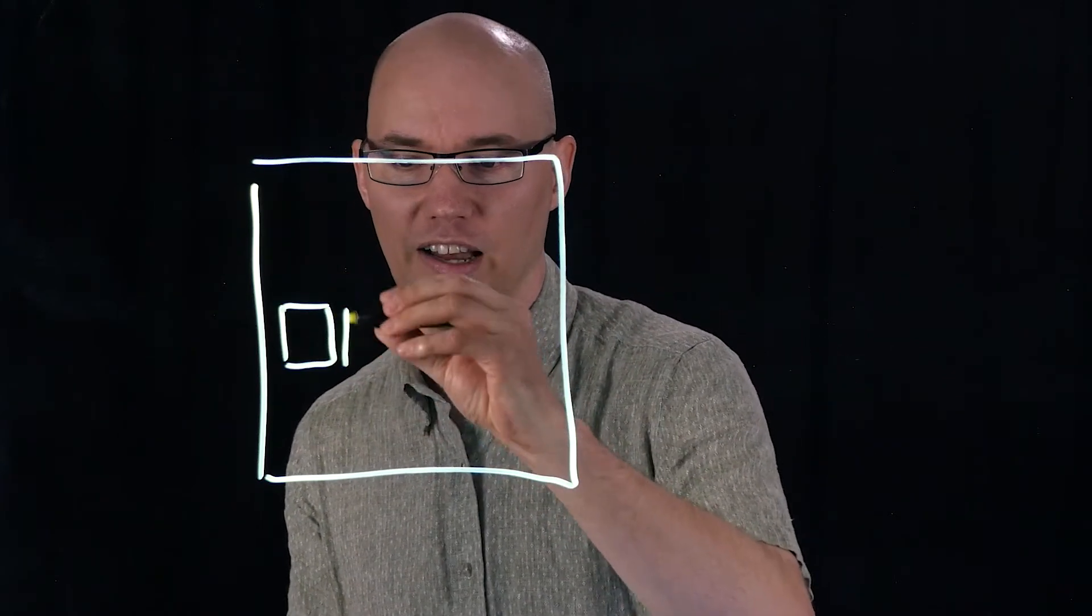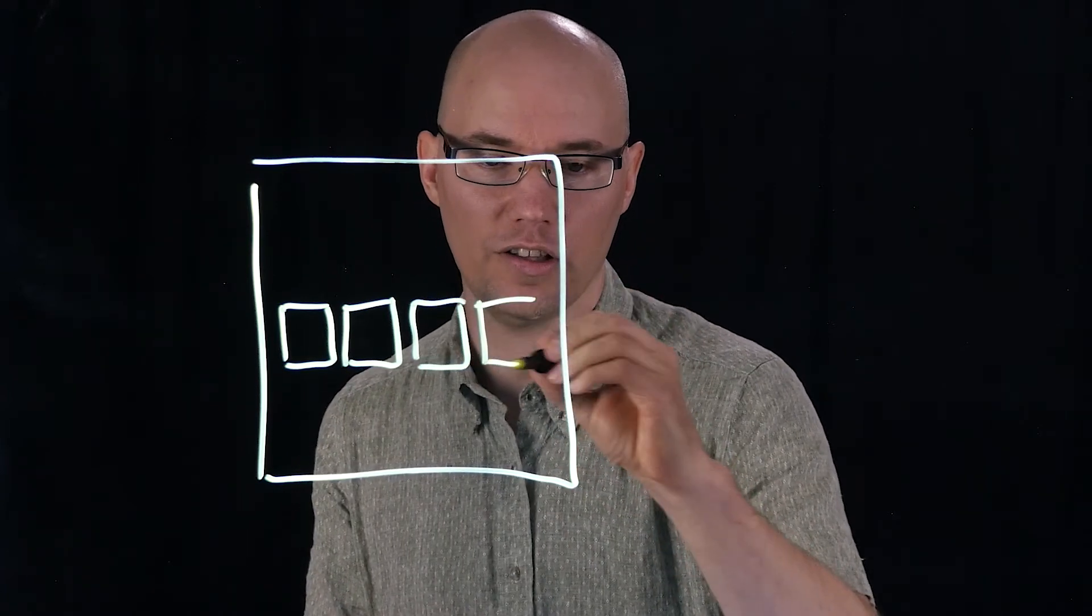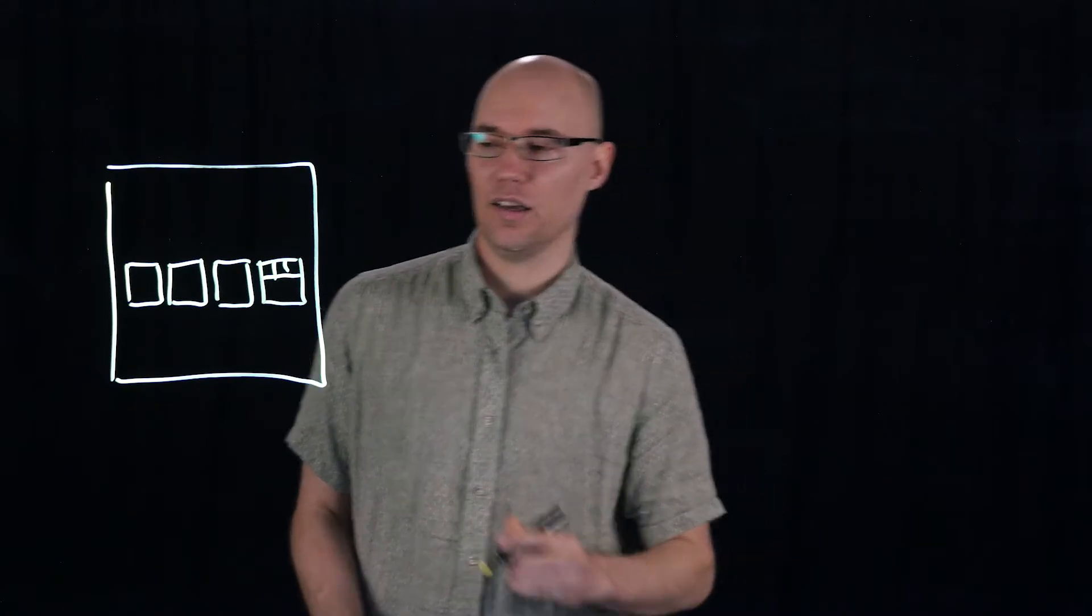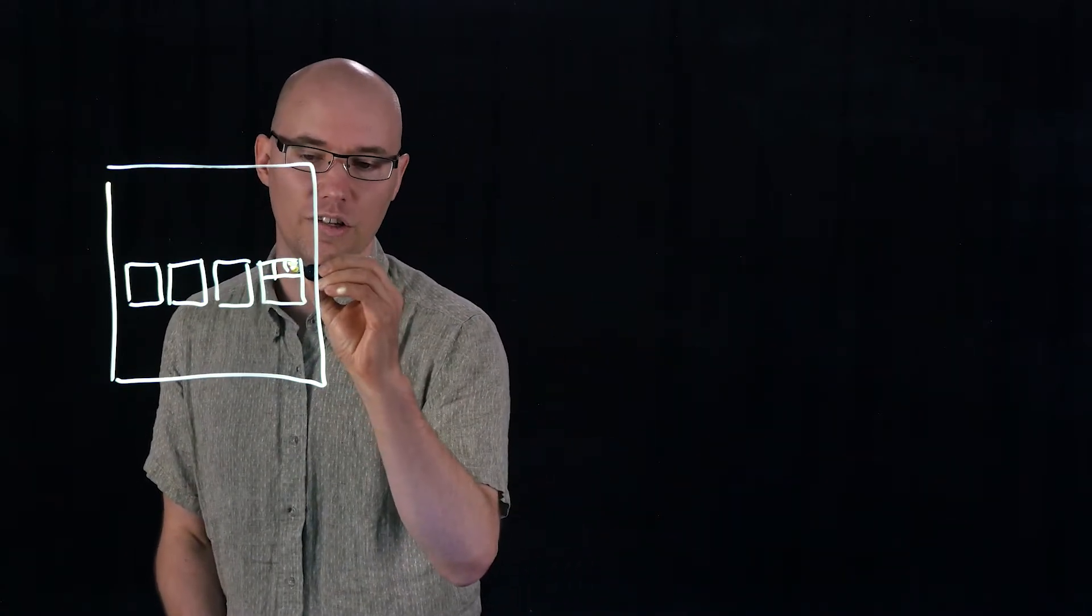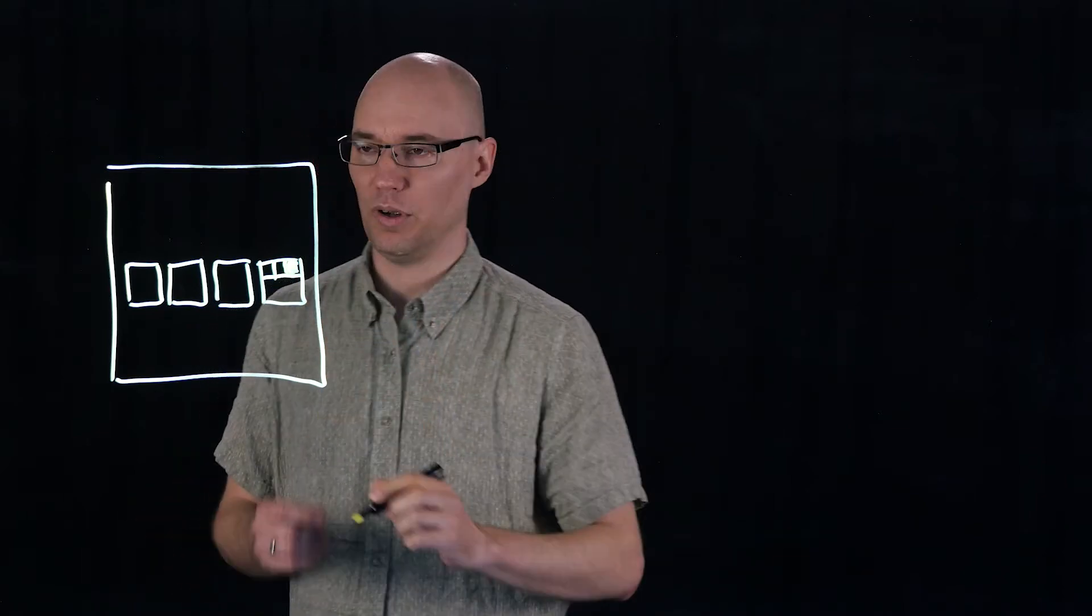I'll start by making a drawing of an SSD. An SSD is built up from flash dies, and each die is broken down into a large number of flash blocks. Now a flash block doesn't support random overwrites. Once it's written with data, the entire block needs to be erased before new data can be written in.